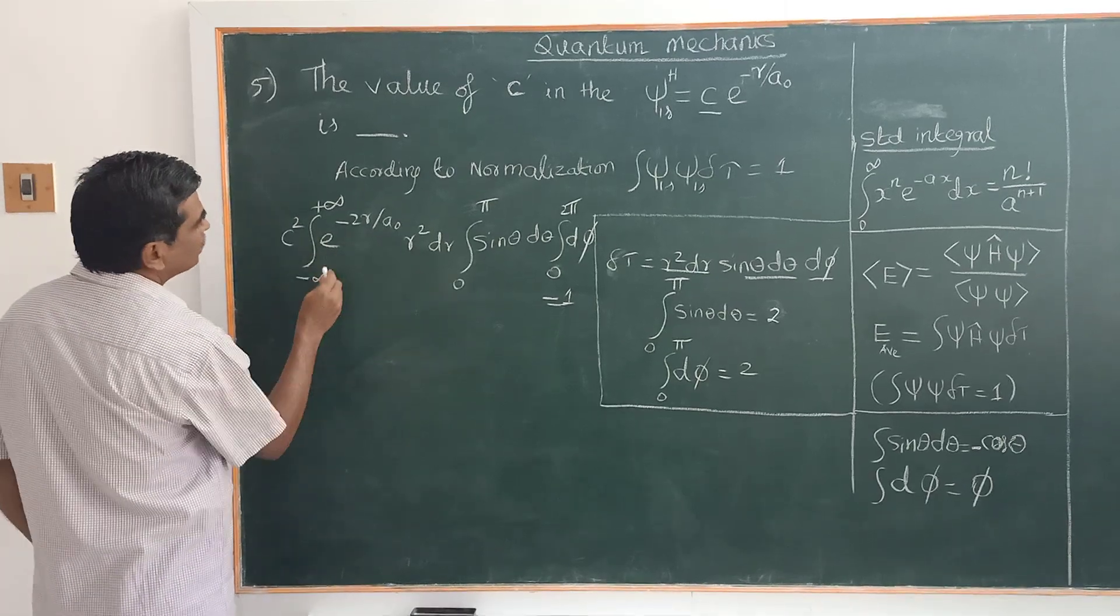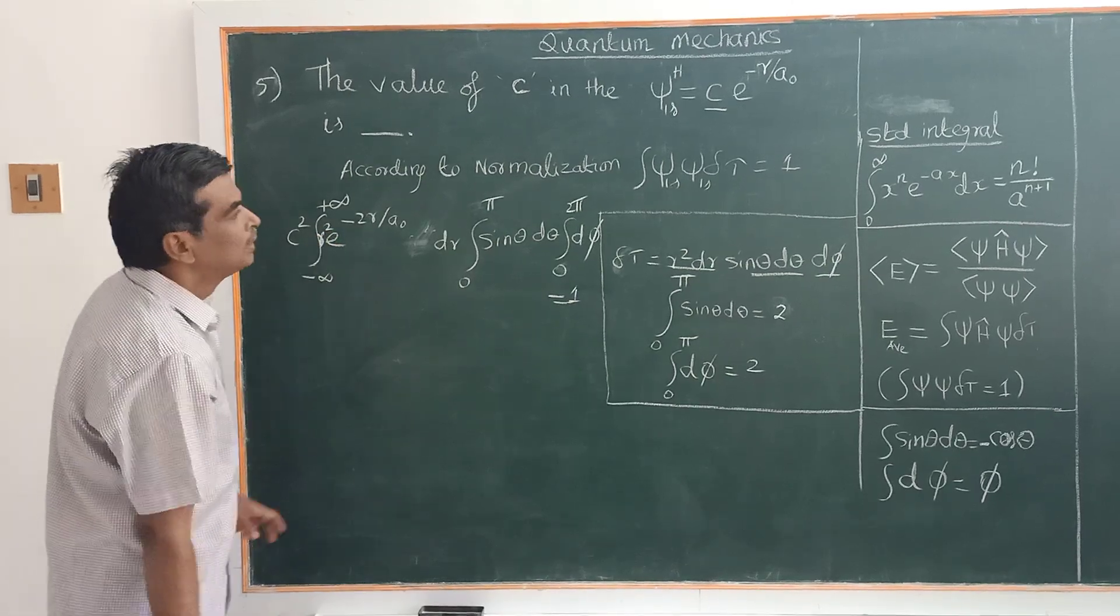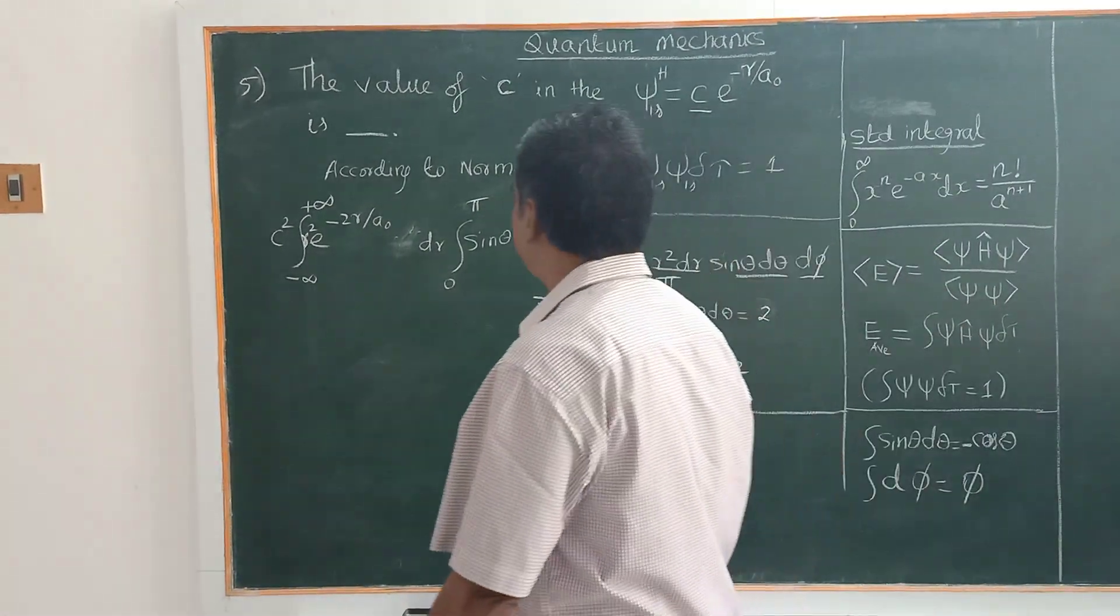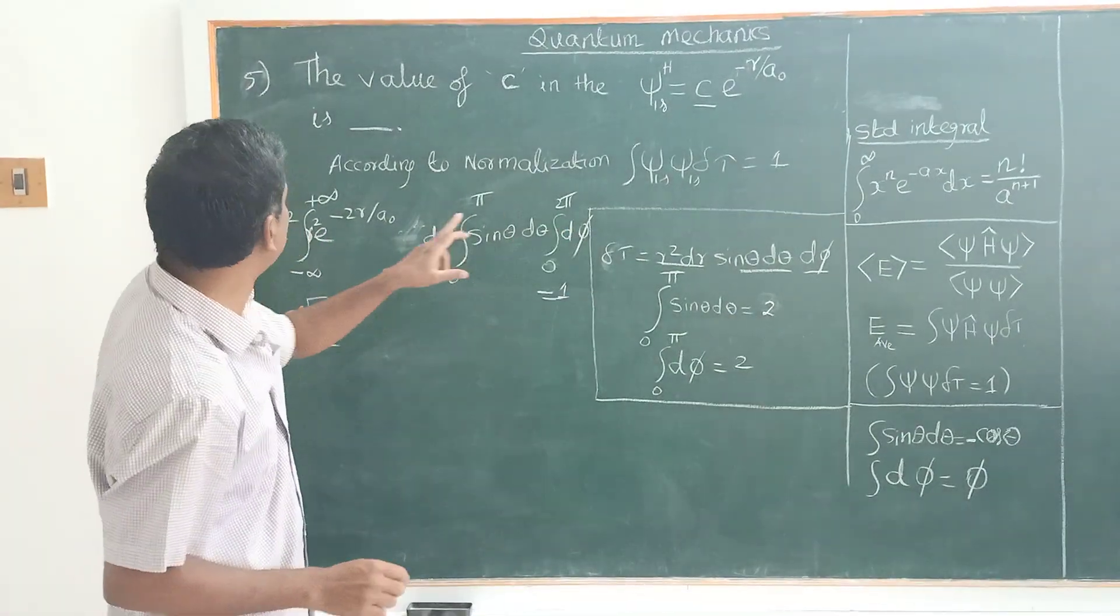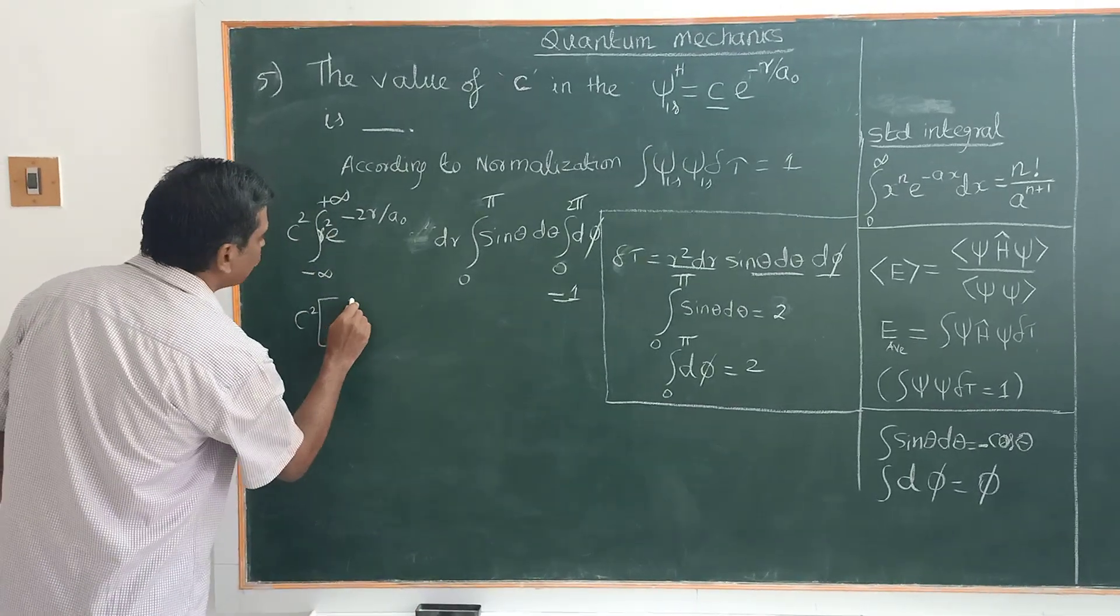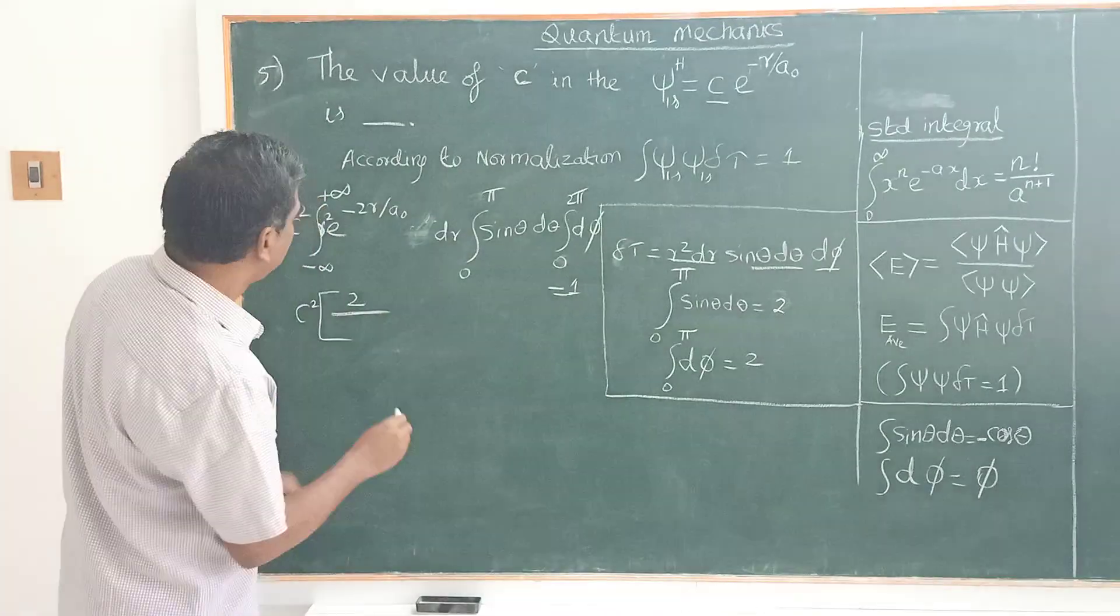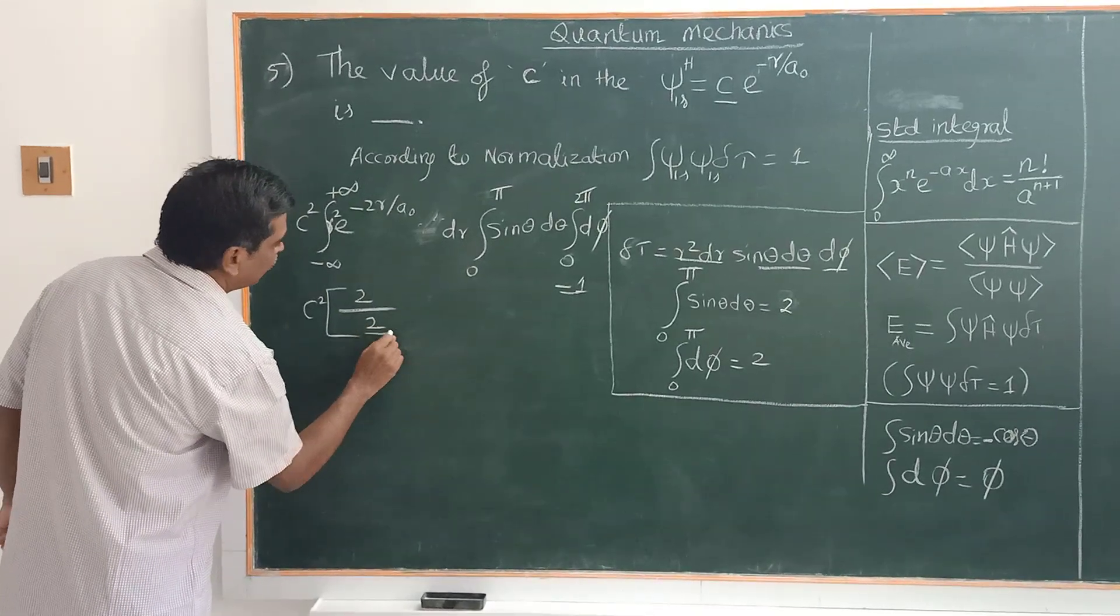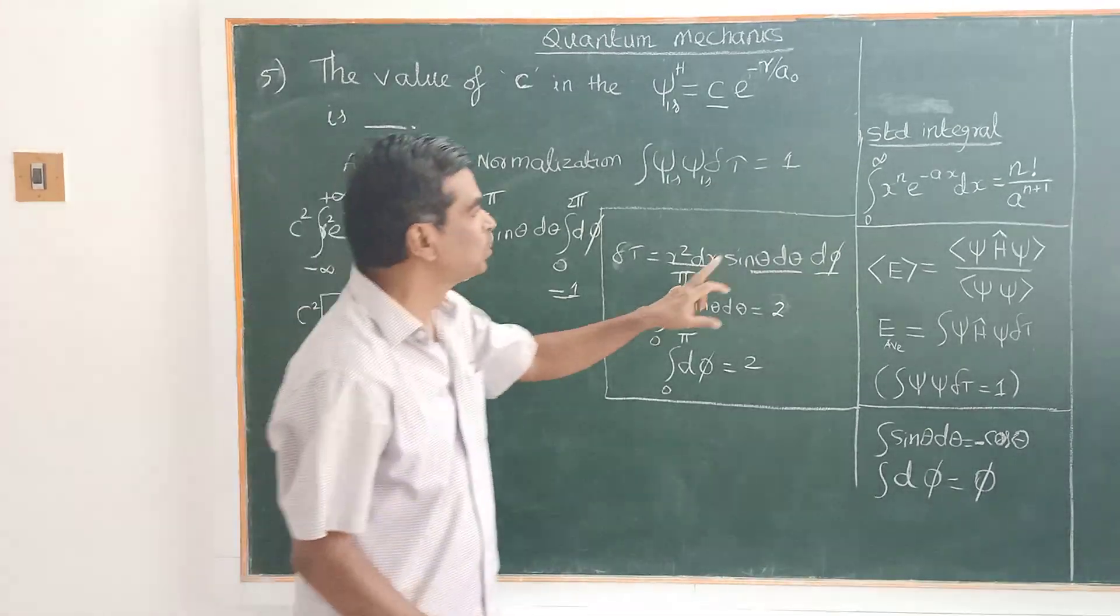Therefore, this R squared you can bring here. By applying the standard integral, the value can be obtained. Therefore, C squared, what it says is n equals here 2, therefore 2 factorial. 2 factorial equals 1 into 2, and a is here 2 by a naught. Therefore, n plus 1, therefore n plus 1 is 3.